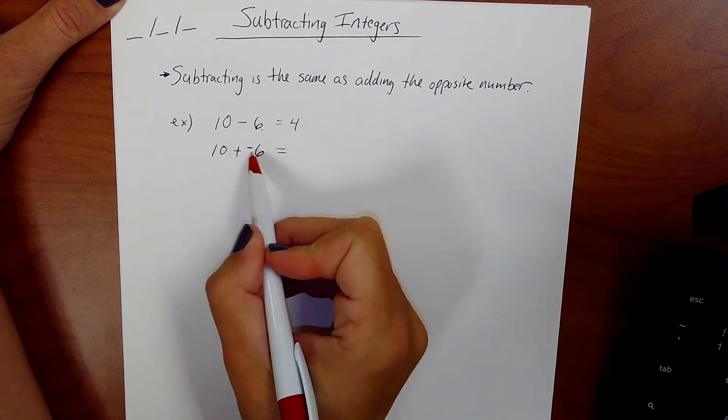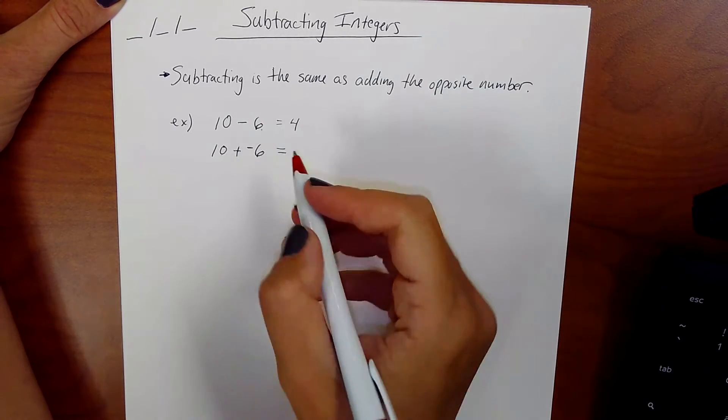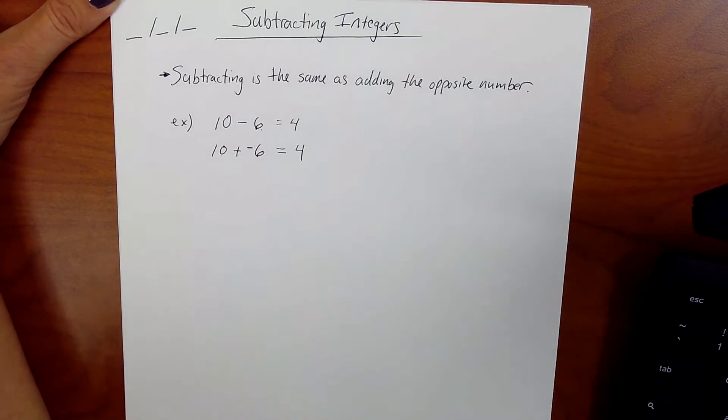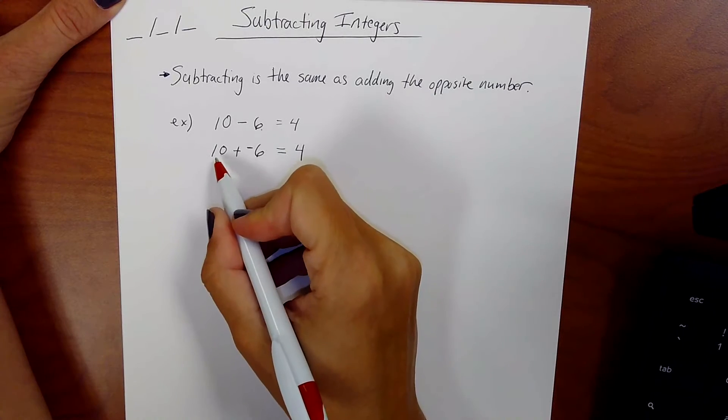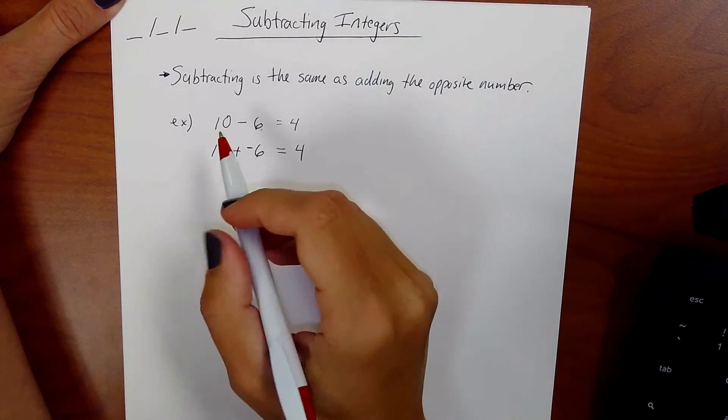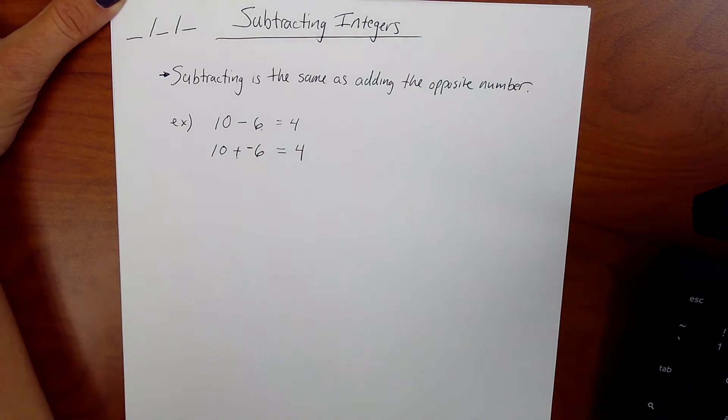This is like the rules from before. Are the signs the same? No. They're different. So we're going to do something different. We're going to subtract. We're going to get a 4 and it's a positive 4 because the 10 is the greater number. So it does work. Now would I make you do 10 minus 6 and change it over? Probably not. You can do 10 minus 6.